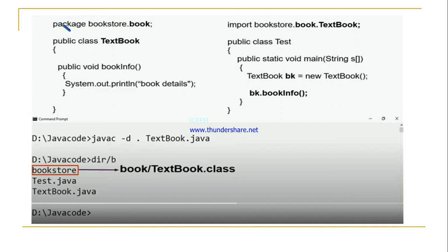Let's see one example of user-defined sub-packages. Suppose we have package bookstore.book. We create one package named book — this book is a sub-package of bookstore. So there is one main package, bookstore, and inside it another package, book.